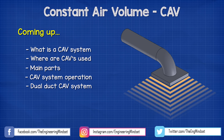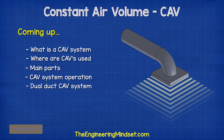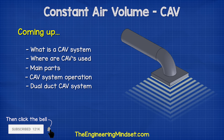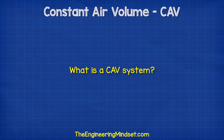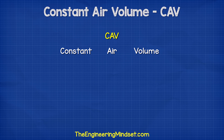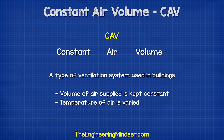Hey there guys, Paul here from TheEngineeringMindset.com. In this video, we're going to be looking at the CAV system to understand the main parts and how it works. CAV stands for Constant Air Volume. It's a type of HVAC air distribution system in buildings where the volume of air supplied is kept constant, but the temperature of the air is varied.